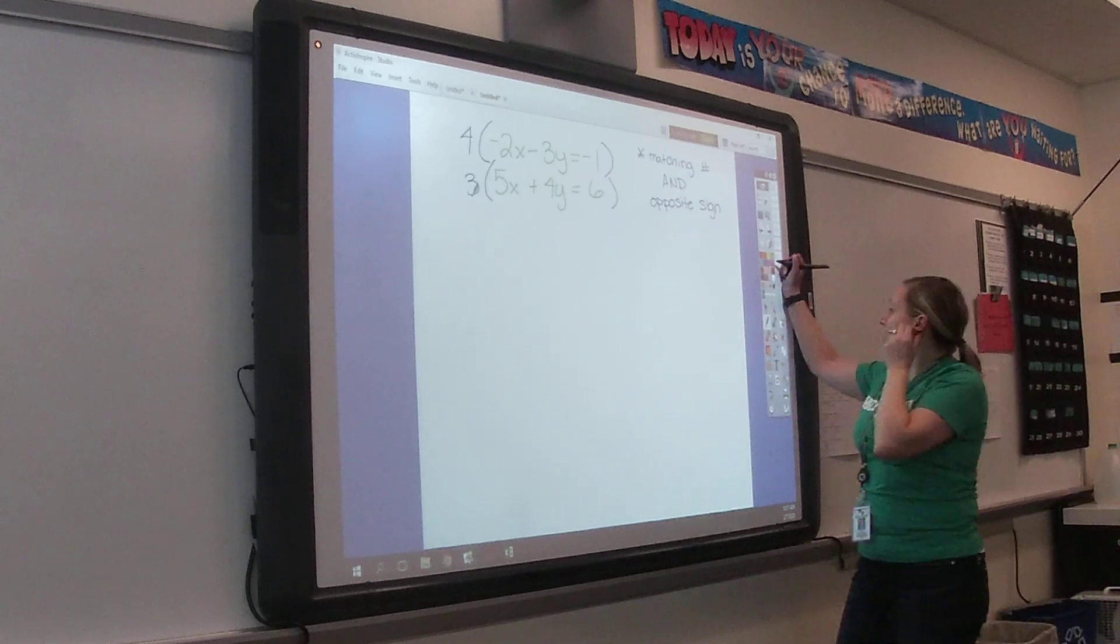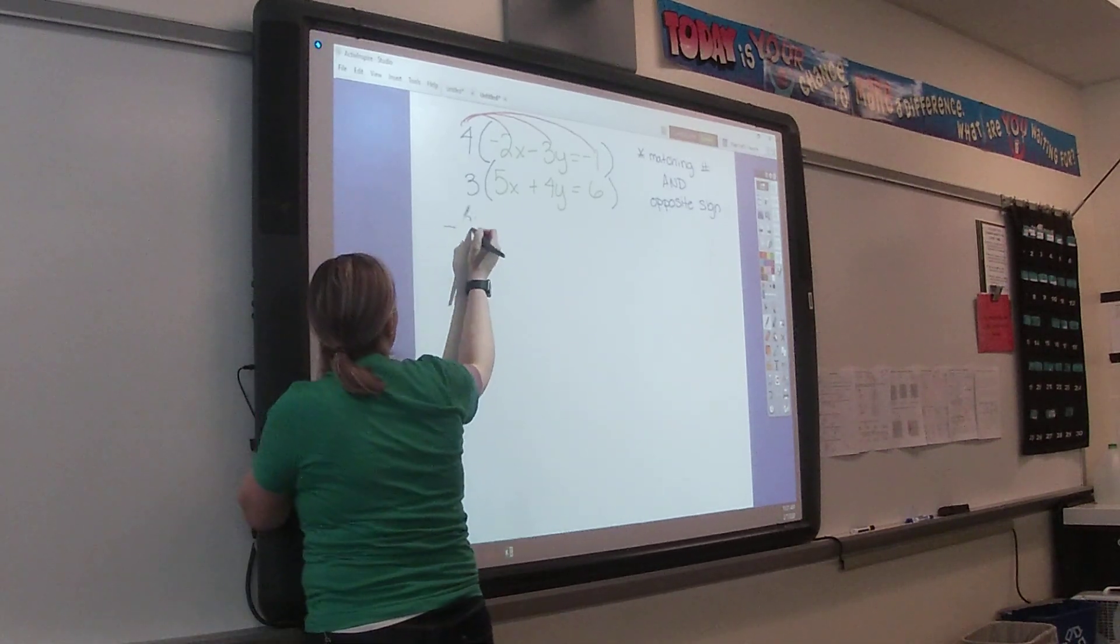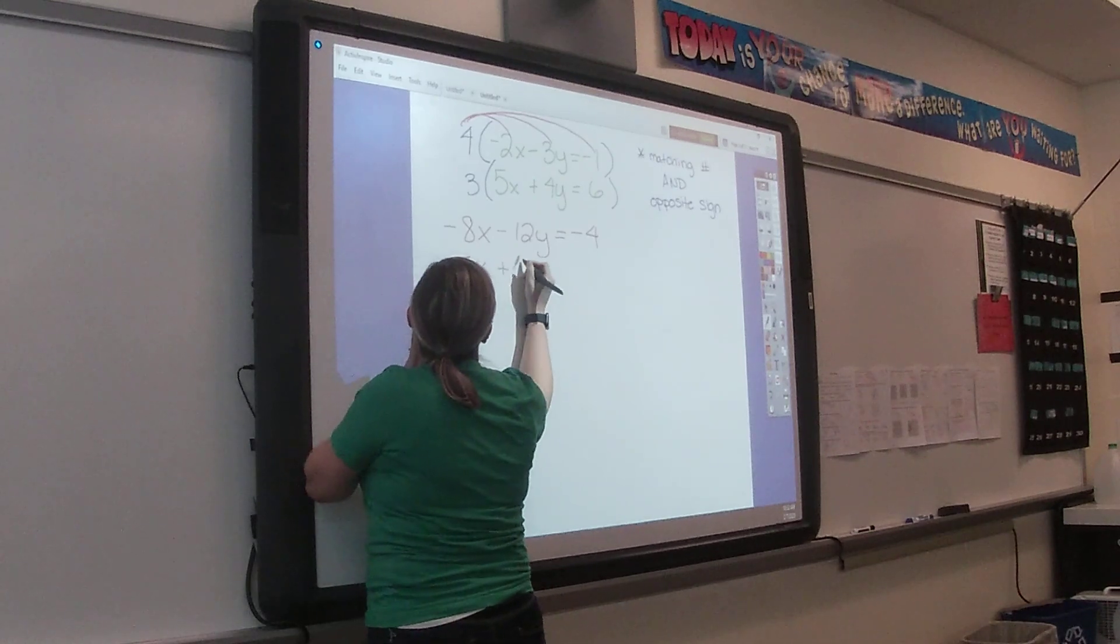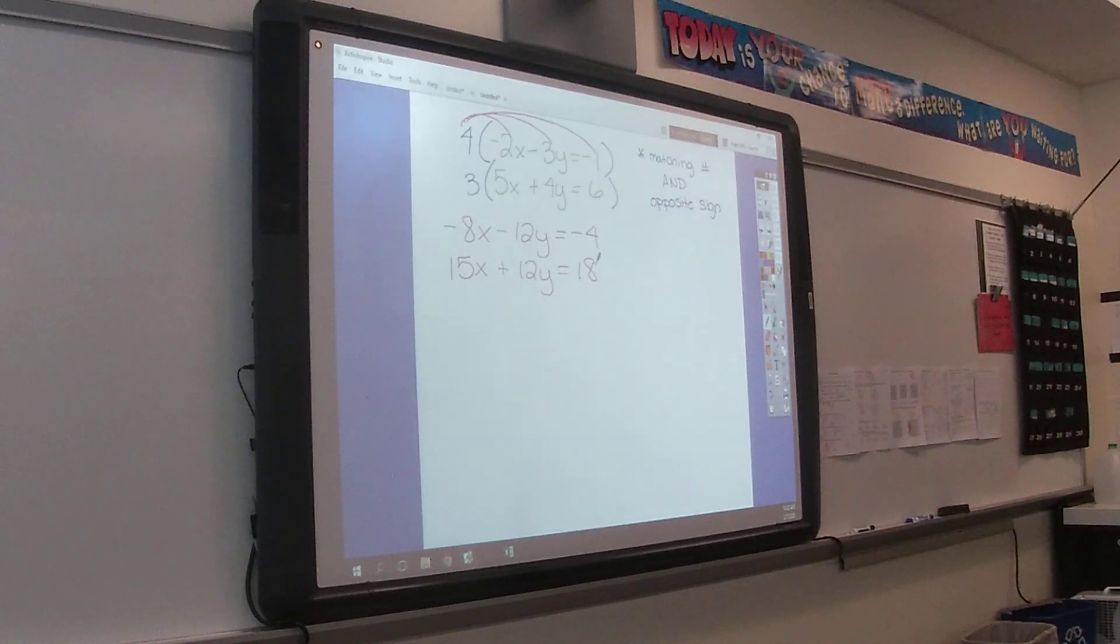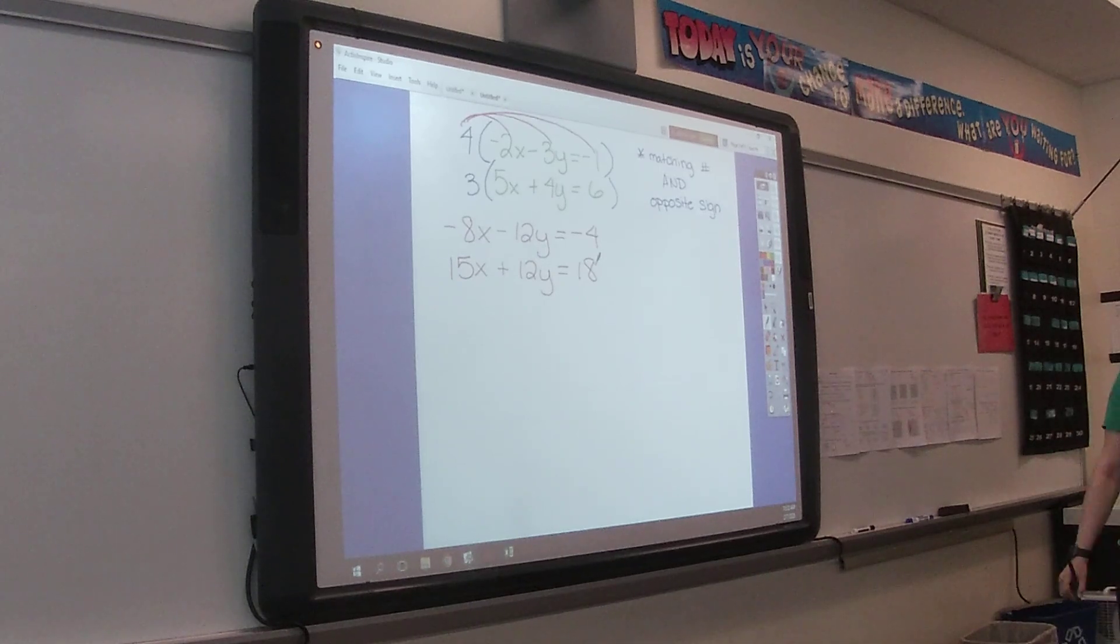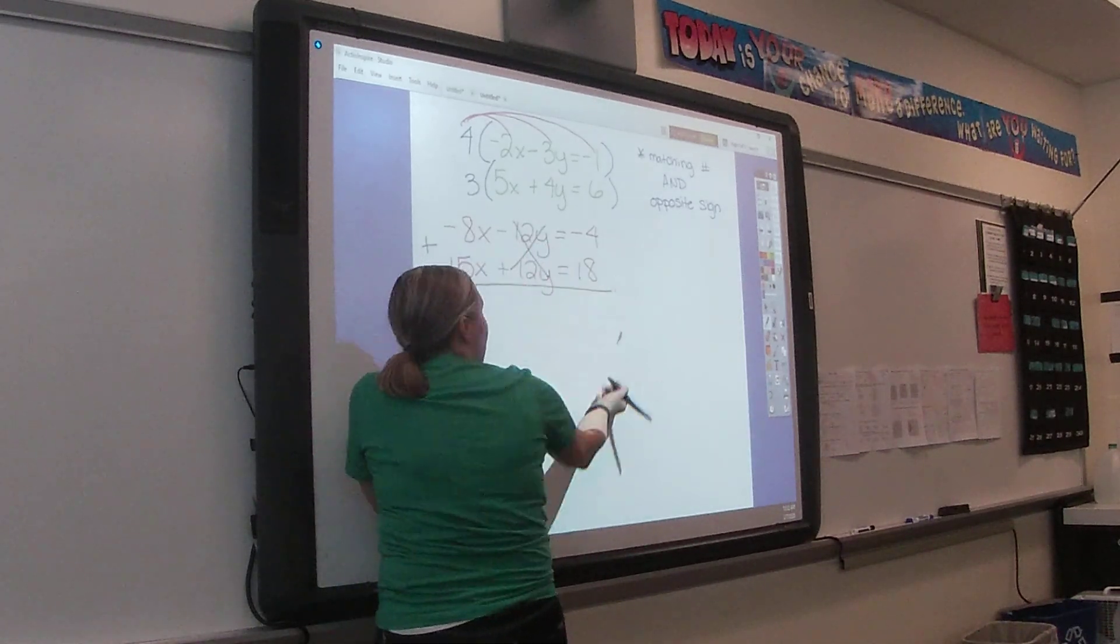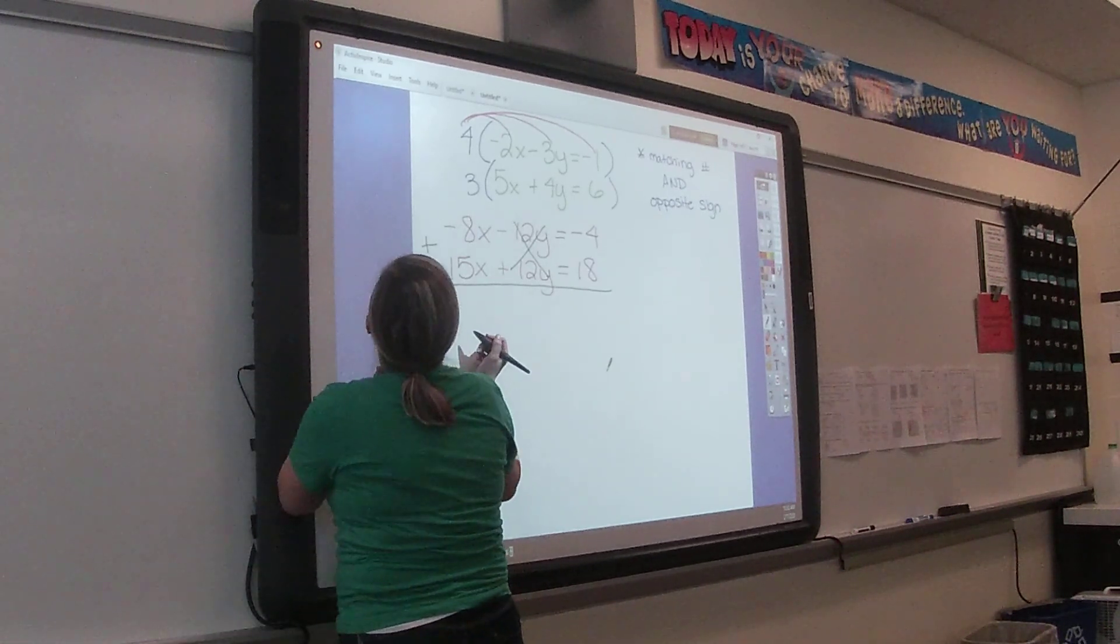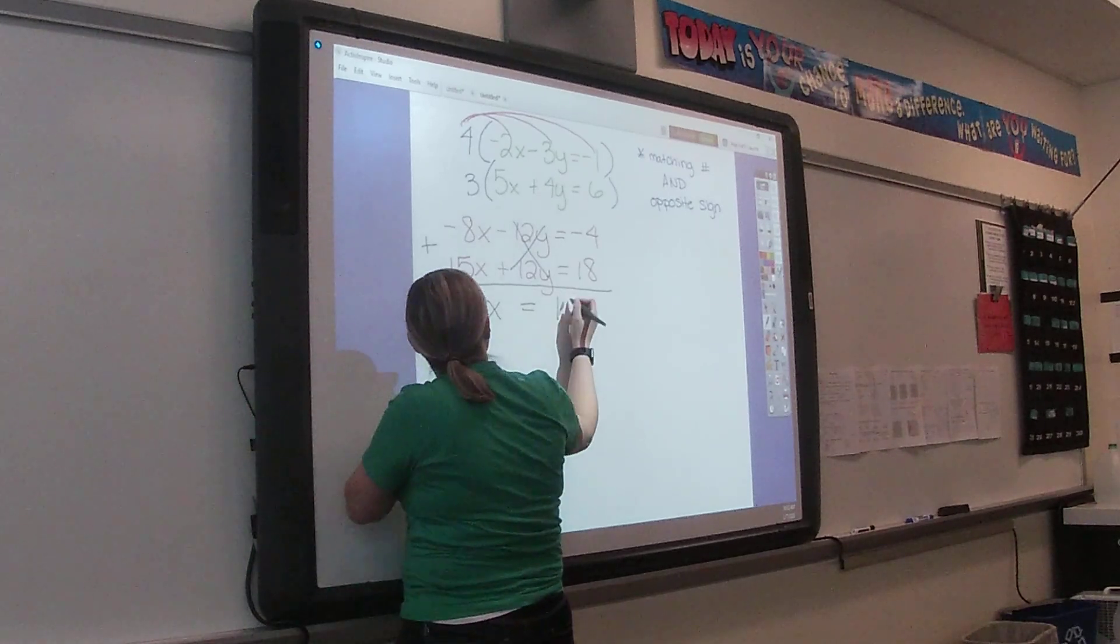Make sure that you're distributing all the way through. Once we multiply through and we get them to match and have the opposite signs, then what do we do? We add, so we're going straight down, we get these to eliminate, which is why we call it elimination. Negative 8 plus 15 gives us 7X equals 14.